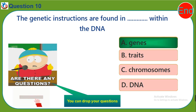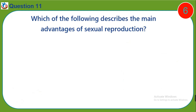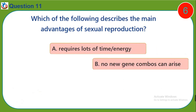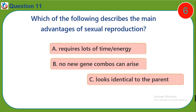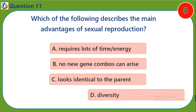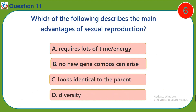Question eleven: Which of the following describes the main advantages of sexual reproduction? a) requires a lot of time and energy, b) no new gene combinations can arise, c) looks identical to the parents, d) diversity.